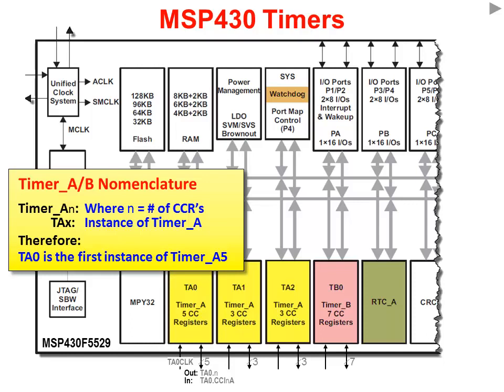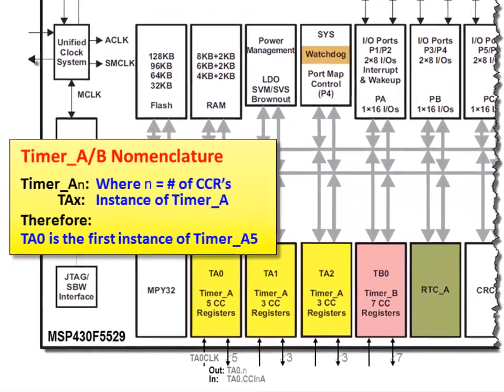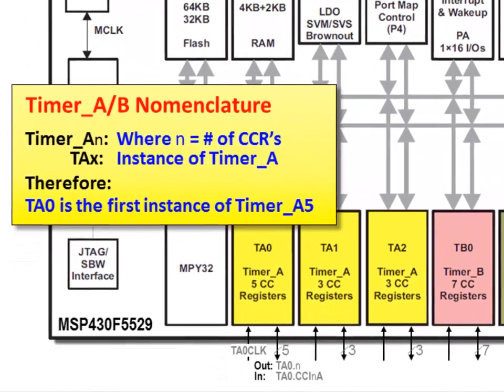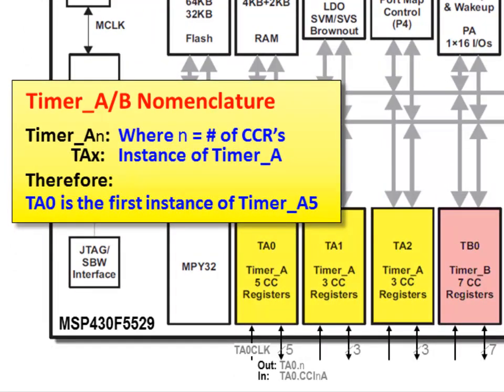There's a little bit more to the nomenclature than just the difference between Timer A and Timer B. The timer nomenclature is also determined by two other things: the number of CCR registers — that is, the number of capture and compare registers — a given timer instance has, and which timer instance it is. For example, if we have three Timer A's on a part, we need to be able to distinguish one from another: TA0, TA1, TA2. So TA0 is the first instance of Timer A on this part. TA1 happens to be a Timer_A3 because it has three CCR registers, and the same goes for TA2.